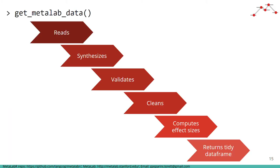Back in R, the get_metalab_data function in the MetaLabR package reads the specified dataset live from the Google sheet. If needed, the function can synthesize multiple datasets on different topics. Behind the scenes, the data is validated and cleaned to ensure adherence to the standardized data format. Then the function computes standardized effect sizes from the values provided in the Google sheet. And finally, the function returns a tidy data frame.